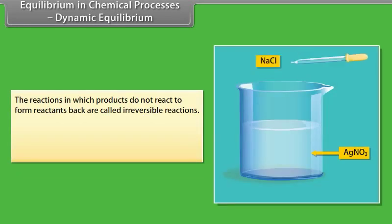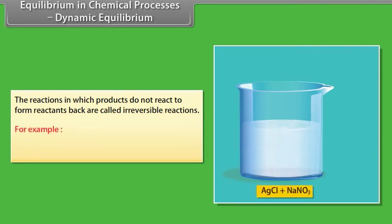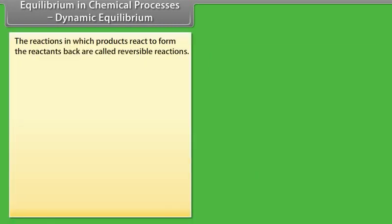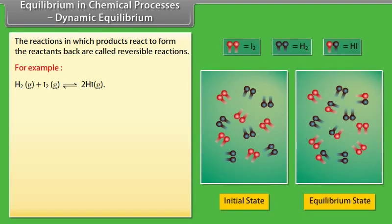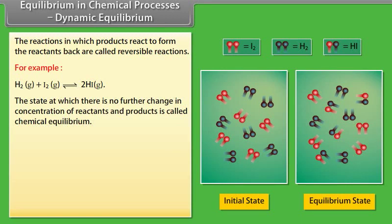The reactions in which products do not react to form reactants back are called irreversible reactions — for example, silver nitrate reacts with sodium chloride to give silver chloride and sodium nitrate. The reactions in which products react to form the reactants back are called reversible reactions, represented by two arrows pointing in opposite directions. For example, hydrogen reacts with iodine to give hydrogen iodide. The state at which there is no further change in concentration of reactants and products is called chemical equilibrium.